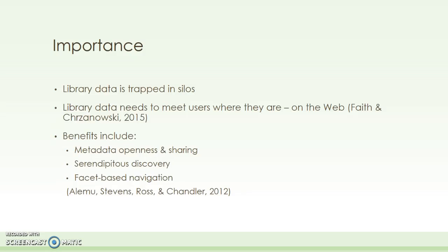To put this project in context, it's important to acknowledge the current state of library data, which is by far still trapped in database silos. By that I mean there's very little or no connection between the catalog databases and the outside world. Users are forced to conduct searches in individual catalogs and searches on the World Wide Web don't yield useful results from the library collections. By implementing linked data, libraries can meet the users where they are rather than making them jump through these hoops in order to find the information that they're looking for. Linked data connects users with information in a much more efficient way than the traditional library catalog search, and it enables users to execute more complex searches.